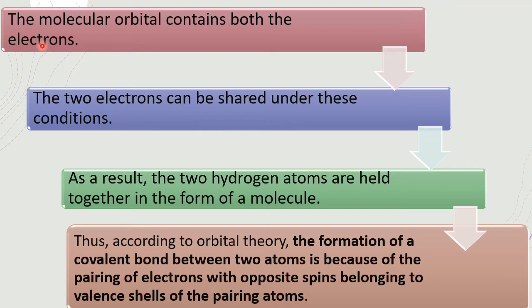Whether it is an atomic orbital or a molecular orbital, it can hold only two electrons according to Pauli's exclusion principle. After overlapping, the hydrogen molecule becomes a molecular orbital which contains two electrons. The two electrons can be shared only under these conditions; otherwise electron sharing cannot take place. For every combination there are some conditions — under those conditions they combine and go for the covalent bond. As a result, the two hydrogen atoms are held together in the form of a molecule. This is how the molecule is formed strictly according to valence bond theory.